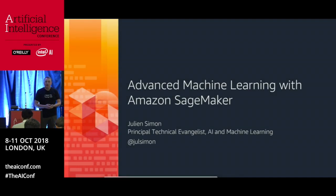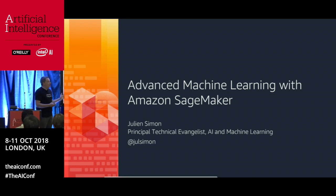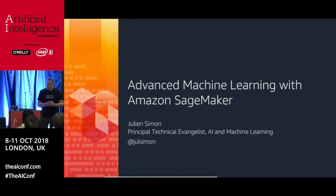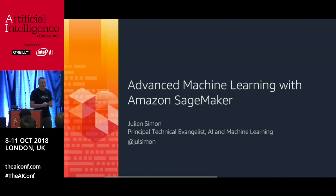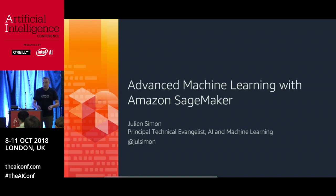Good morning, everybody. My name is Julian. I'm a tech evangelist with AWS, and I focus on AI and machine learning. This session will focus on my preferred service for machine learning, called Amazon SageMaker. I'll start with a quick recap on what SageMaker does, and then we'll dive into the more advanced and latest features, covering cool things like hyperparameter optimization.